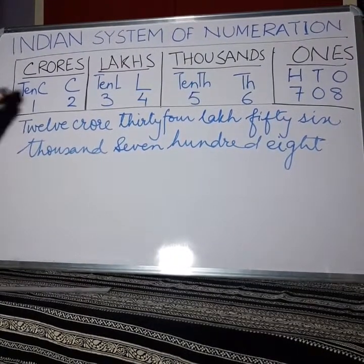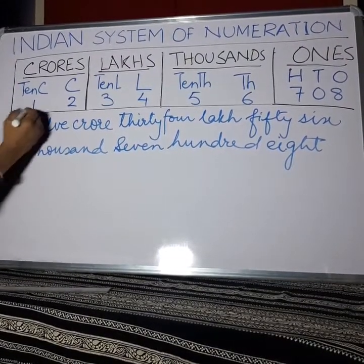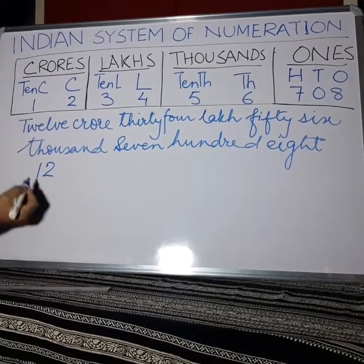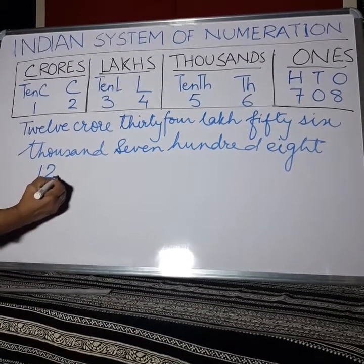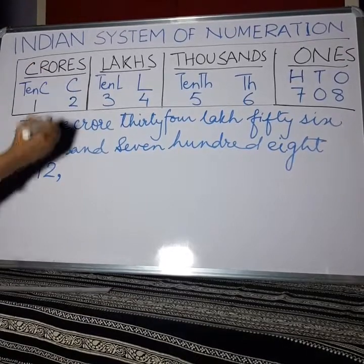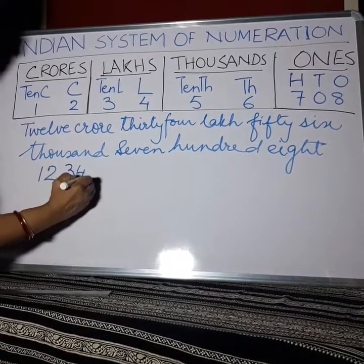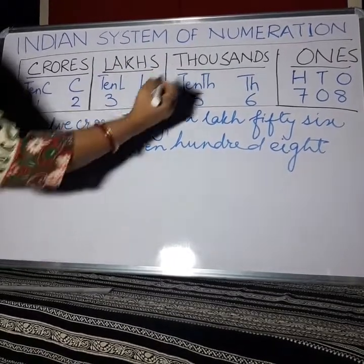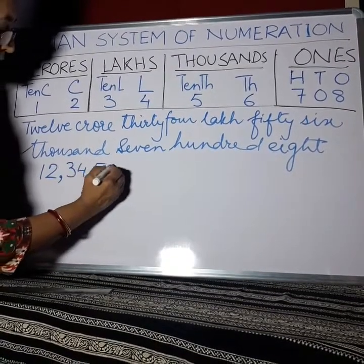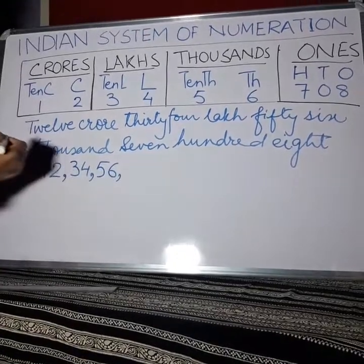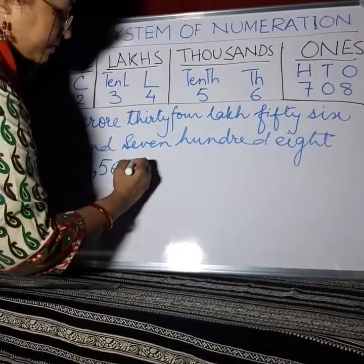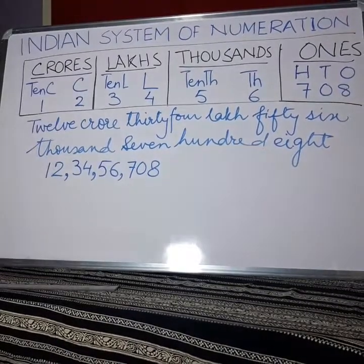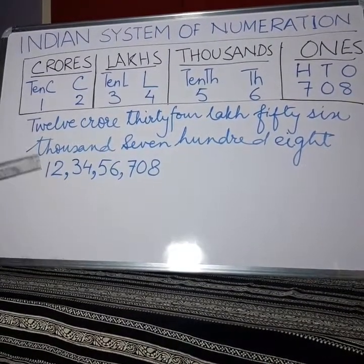Now we write this in figures. 12 crores — a comma will be there according to the period. Then 34, a comma is there for the Lakhs period, then 56,000 — again a comma — and 708. So this is the number in figures, and the previous was in words.